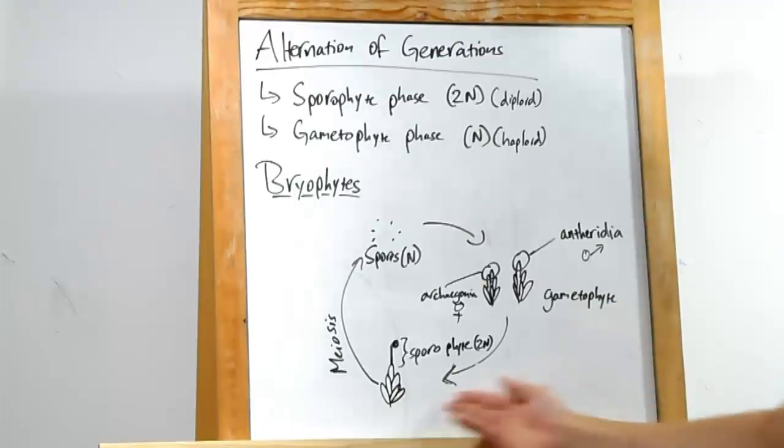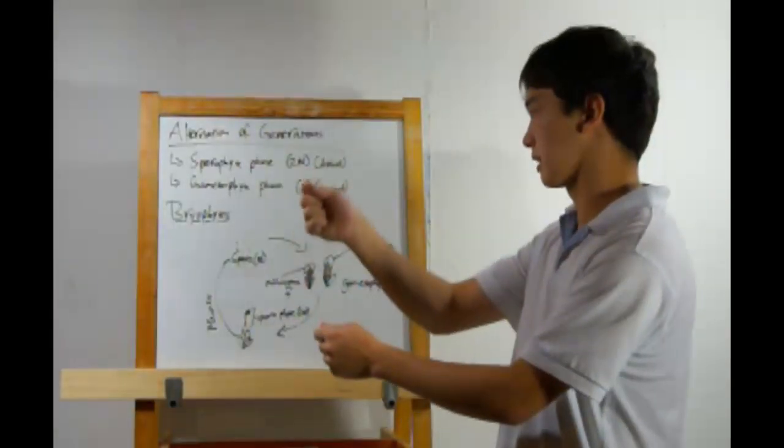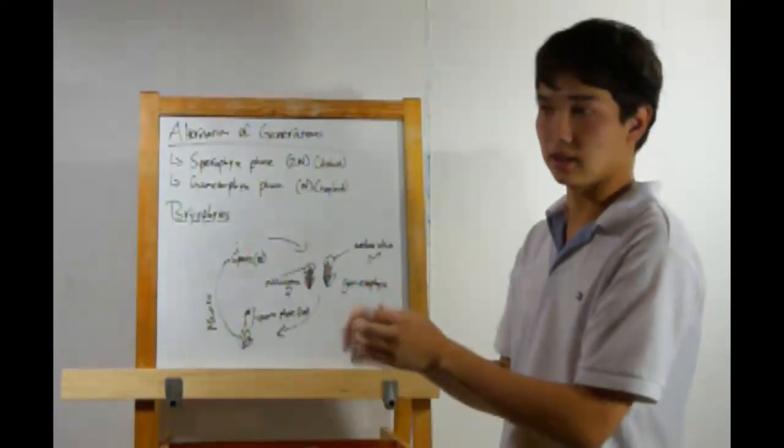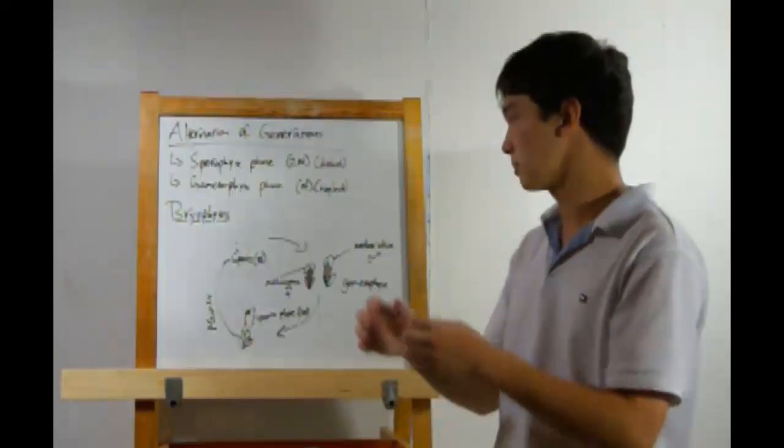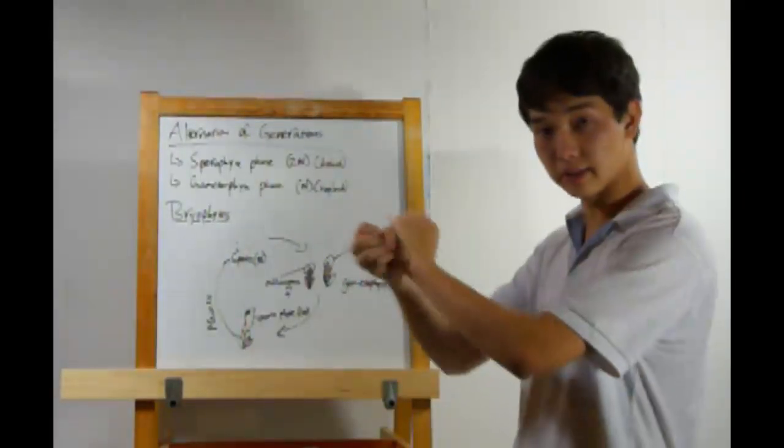This starts the growth of a sporophyte, a diploid generation. This will grow out of the gametophyte, and in mosses it'll look brown and stick-like, though it won't be very rigid. The sporophyte will then undergo meiosis to produce haploid spores, which it'll then release.